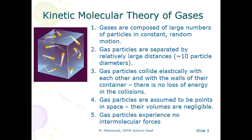Number two: gas particles are separated by large distances, relatively speaking. On an absolute scale the distances are infinitesimal, but relatively — compared to the size of the particles themselves — are gas particles separated by large distances? The theory says on average approximately 10 diameters. So on average, if you had a hydrogen molecule in the gas phase, the nearest neighboring hydrogen molecule would be about 10 diameters away.